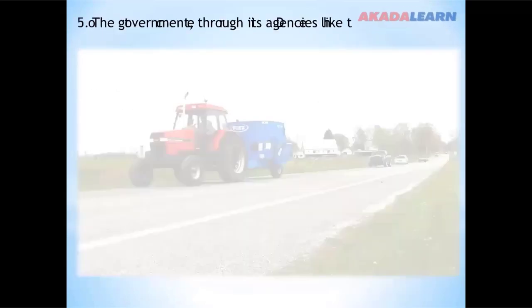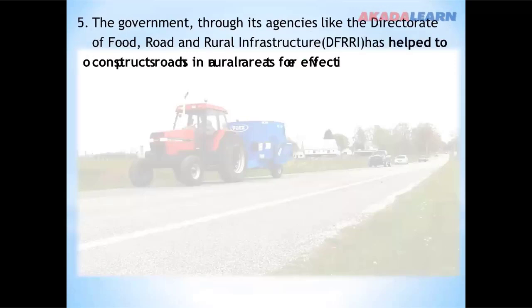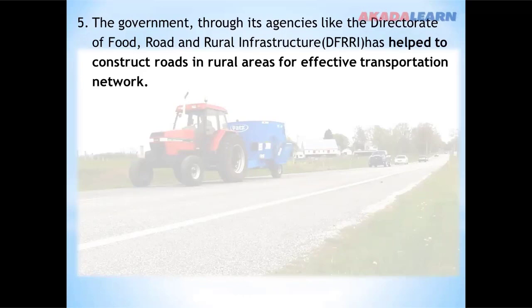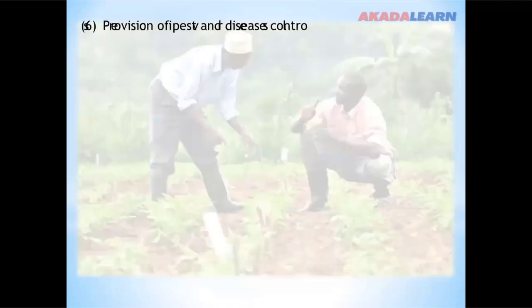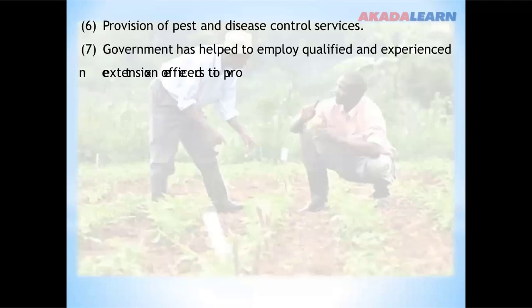Government also, through its agency like the Directorate of Food, Road, and Rural Infrastructures, has helped to construct roads in rural areas for effective transportation network. This will enable the farmers to connect to markets located in towns or cities. Provision of pest and disease control services by the government. Government has helped to employ qualified and experienced extension officers to provide extension services to rural farmers.